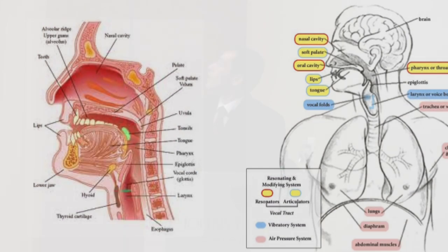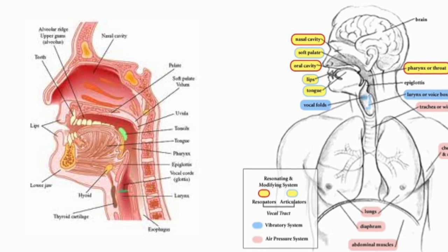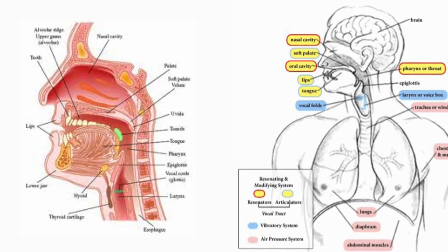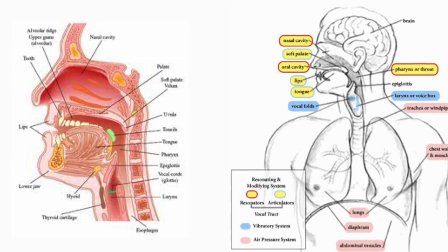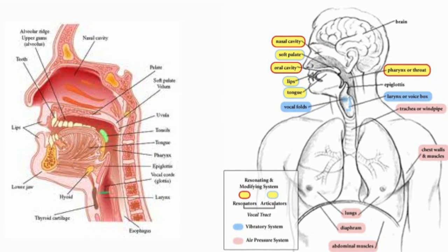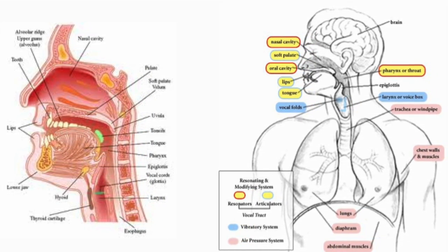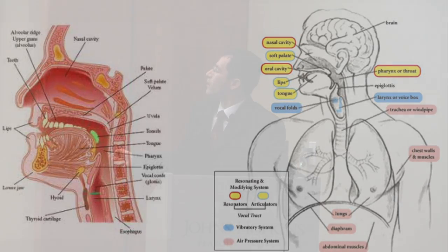The third part of vocal anatomy is the resonator — a resonating cavity above the larynx responsible for giving the voice its tonal quality. It includes the vocal tract, much of the throat (the pharynx), the oral cavity, and nasal passages. Finally, the articulator includes our tongue, lips, cheeks, teeth, and palate, which help us shape sounds into recognizable words and specific vocalizations.